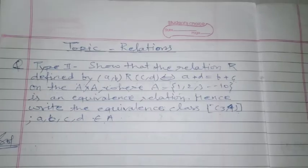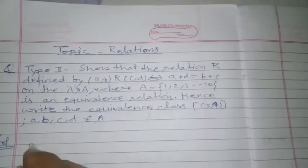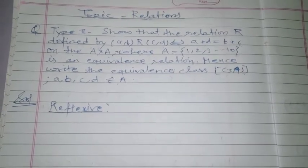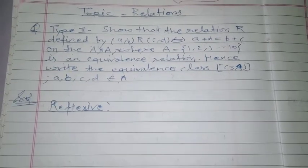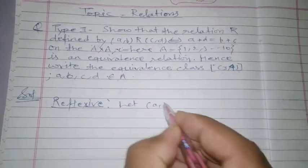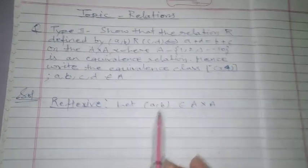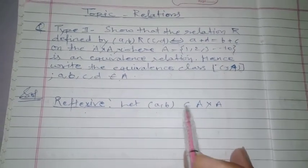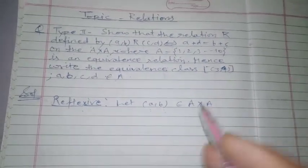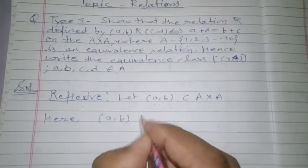For equivalence relation we have to prove that the given relation is reflexive, symmetric, and transitive. Starting with reflexive: since the relation is defined on A×A, we take an element (a,b) belonging to A×A. For reflexive relation we have to show that every element relates with itself, so we need to prove that (a,b) R (a,b).